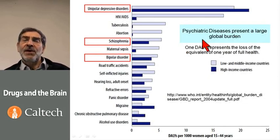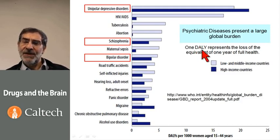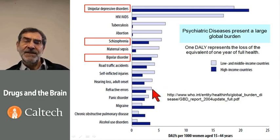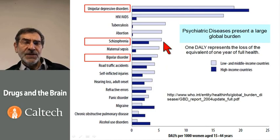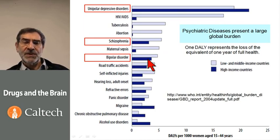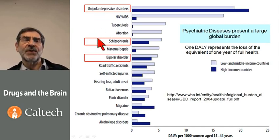Psychiatric diseases present a large global burden. There is a unit called the DALY — the disability-adjusted loss of a year's worth of full health. This is a chart of the World Health Organization's data for DALYs for women around the world aged 15 to 44 years. This chart tells us that among high-income countries, three major sources of loss of full health, loss of work, loss of productivity, and unhappiness are the psychiatric diseases that we're going to discuss this week.